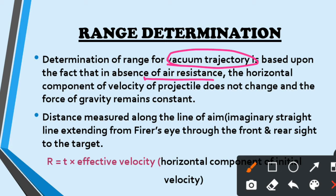So this is the condition of your velocity — which is the horizontal component of your projectile's velocity, that horizontal component remains unchanged. If you talk about the gravitational pull, which is the force of gravity, that remains constant.